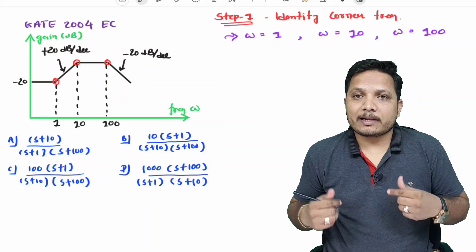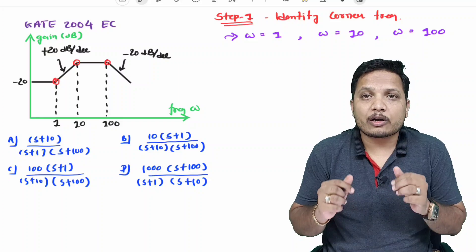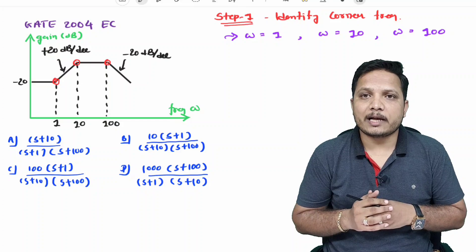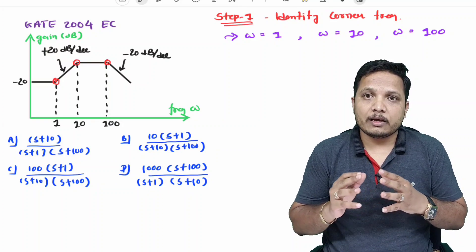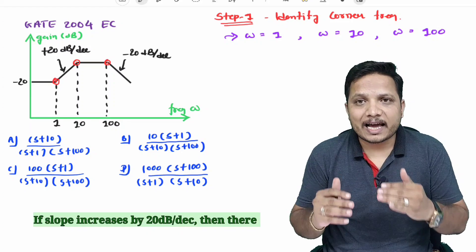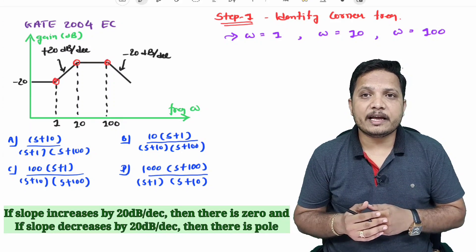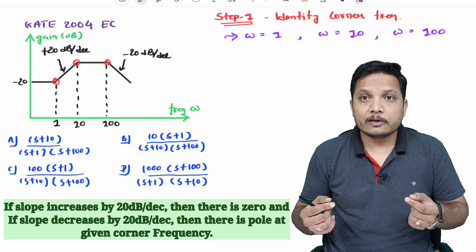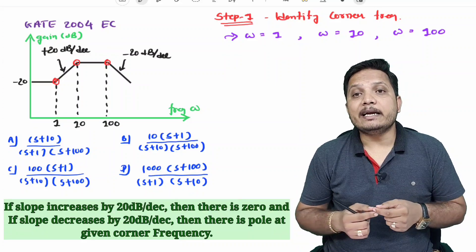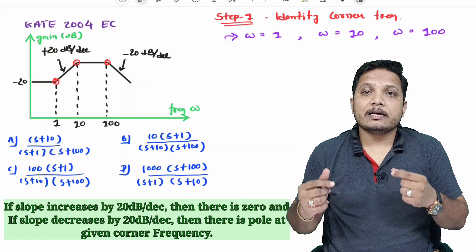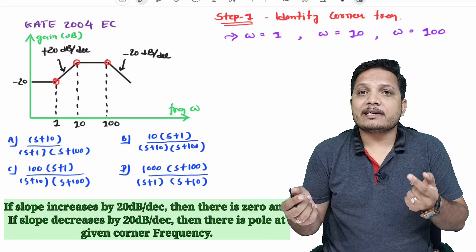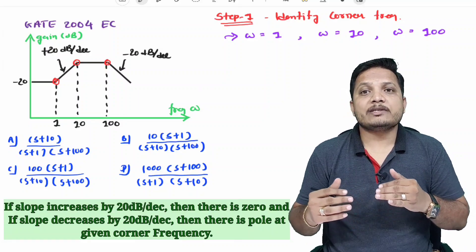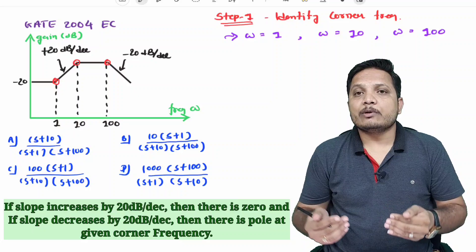Our next agenda is to understand whether there is a pole or zero at each given corner frequency. How to identify poles or zeros at a corner frequency is based on the change in slope. If the slope of the line is increasing by 20 dB per decade, then there is a zero at that instant. If the slope is decreasing by 20 dB per decade, then that corner frequency has a pole. Based on increment or decrement in slope, we can identify poles and zeros.